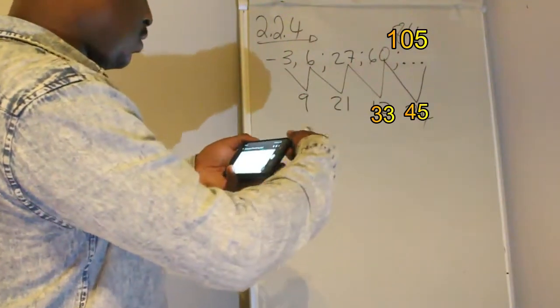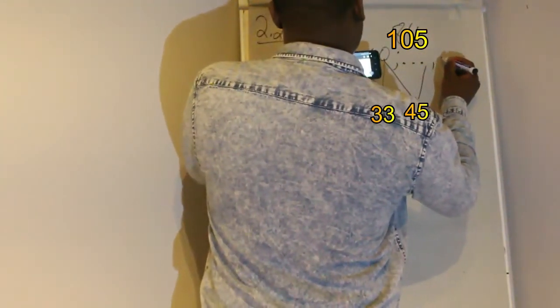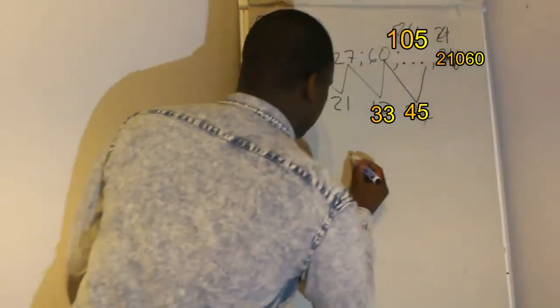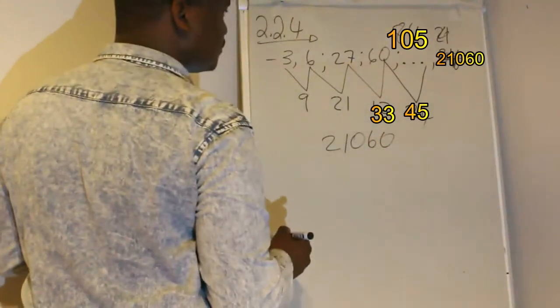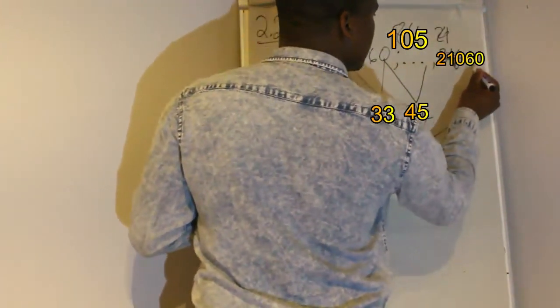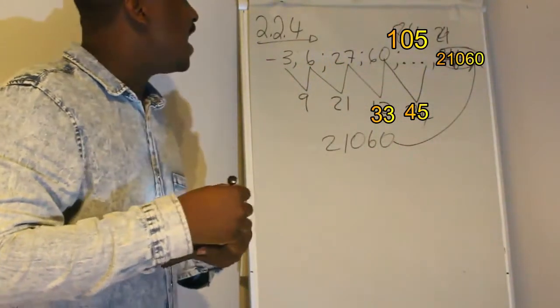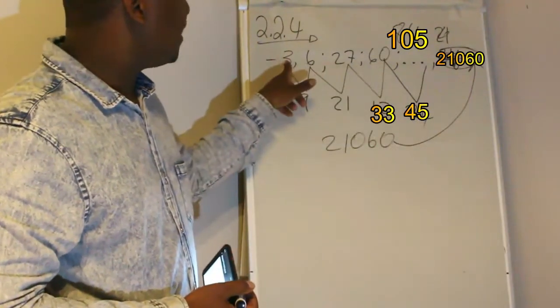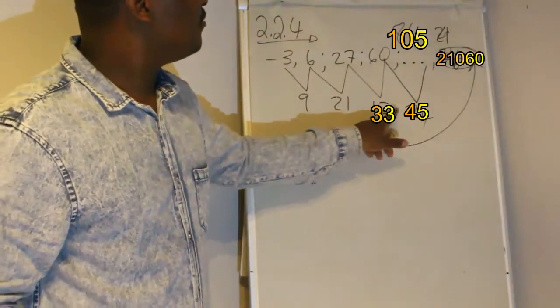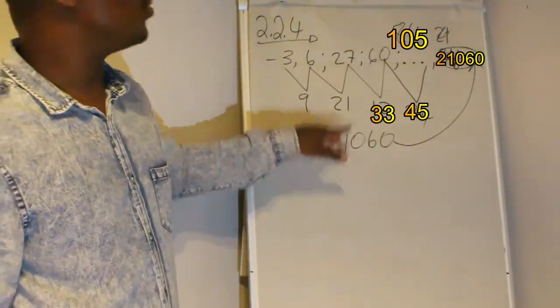So now, they have given you that you have, you can pause this question and read the question yourself. So you have at some point the term 21,060, which belongs to this pattern, the quadratic pattern. So let's say we have 21,060 here. They're asking you how many of these terms did you add there in order to achieve this, in order to get this number?